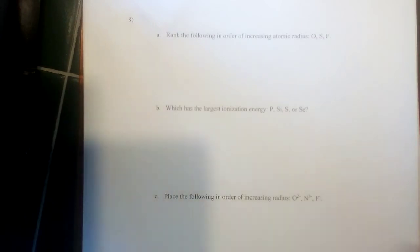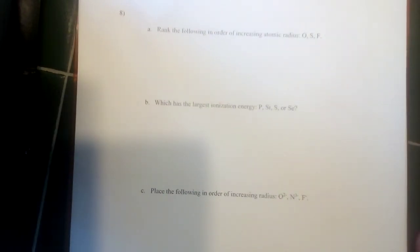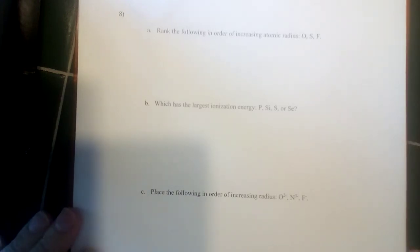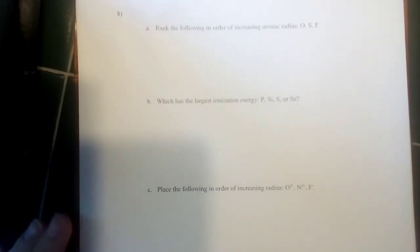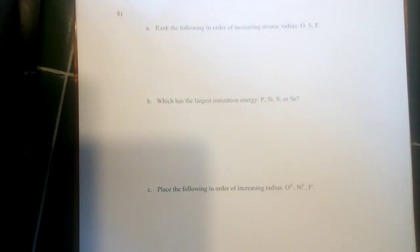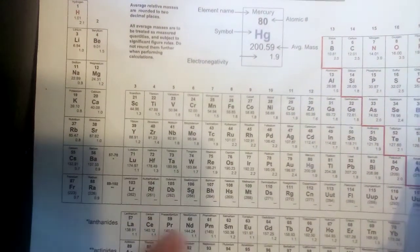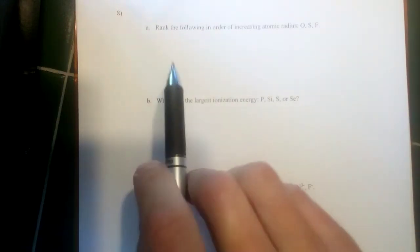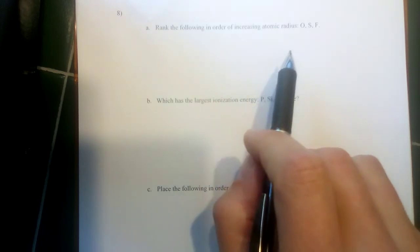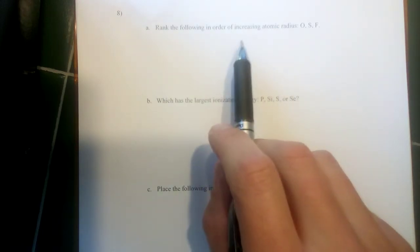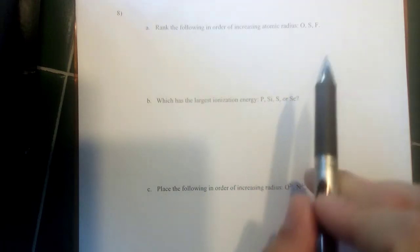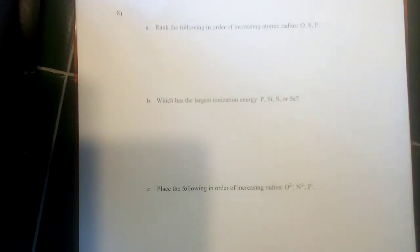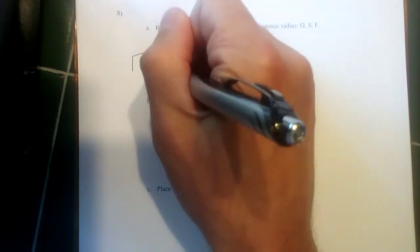All right, last question on the practice exam. This last question relates to periodic properties — things we should be able to figure out from our analysis of electron configurations, nuclear charge, and shielding. The first part asks us to rank oxygen, sulfur, and fluorine in order of increasing atomic radius, starting with the smallest and going to the largest.